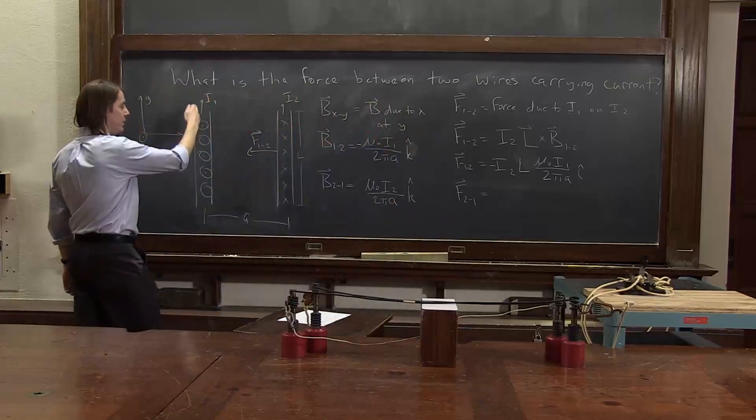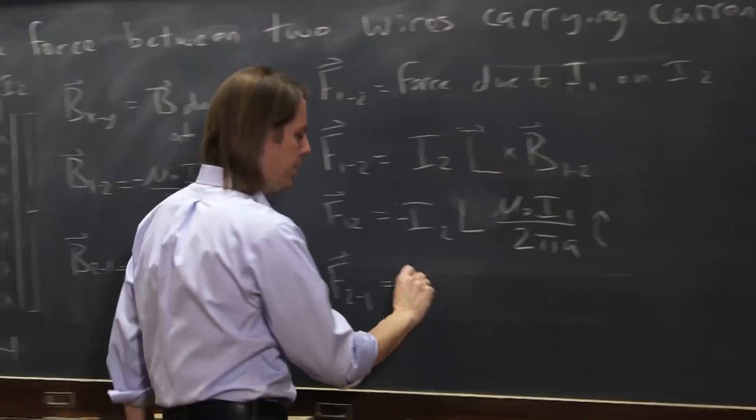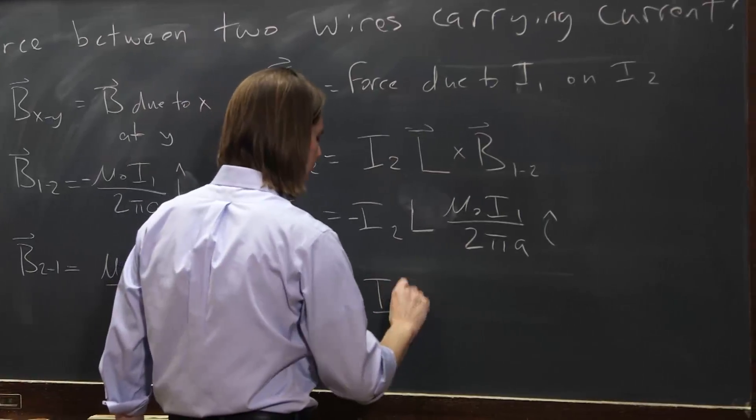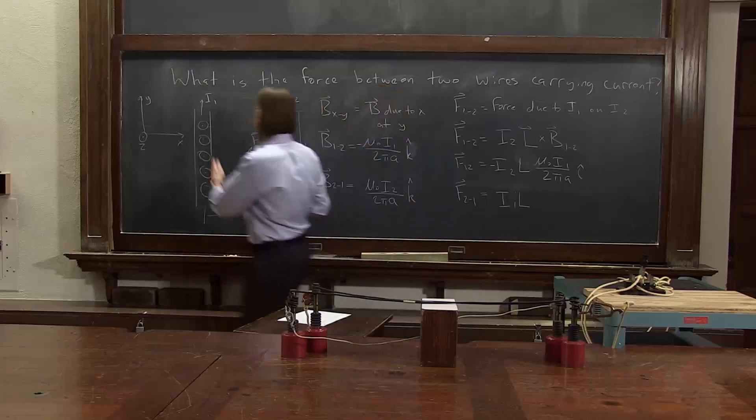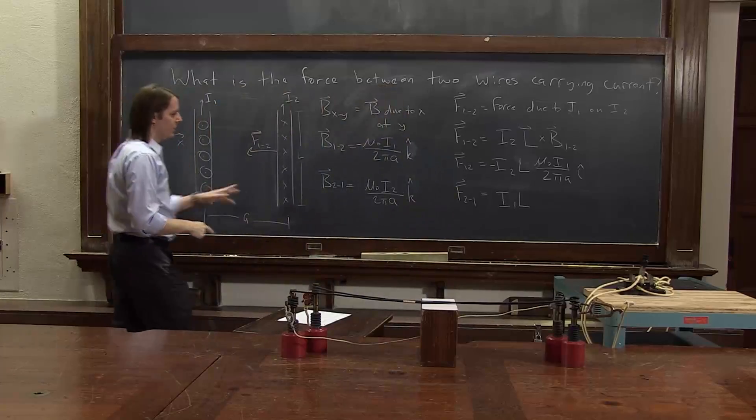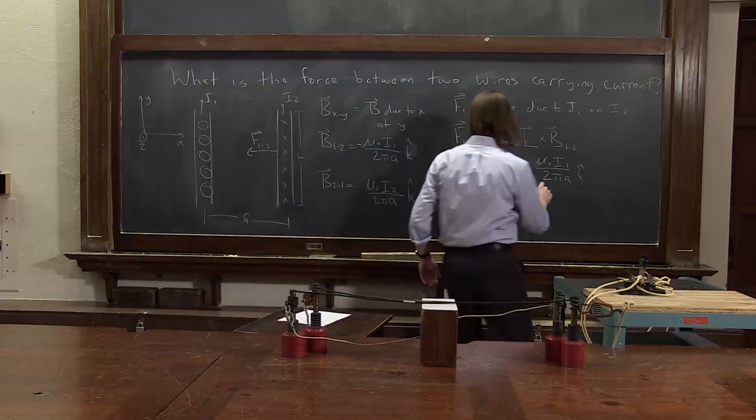Well, almost the same. It's going to depend on I1 rather than I2, because it's the force on one, L cross with B. So L and the magnitude of B, we want the B here. That's B21. So it's mu naught I2 over 2 pi A.